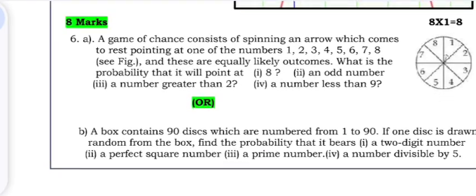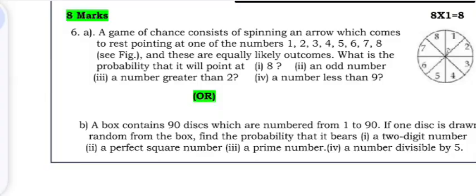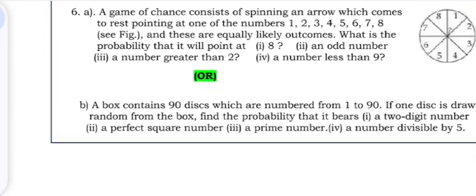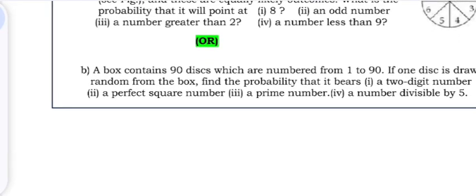Question 6: A game of chance consists of spinning an arrow which comes to rest pointing at one of the numbers 1, 2, 3, 4, 5, 6, 7, 8 and these are equally likely outcomes. What is the probability that it will point at 8?